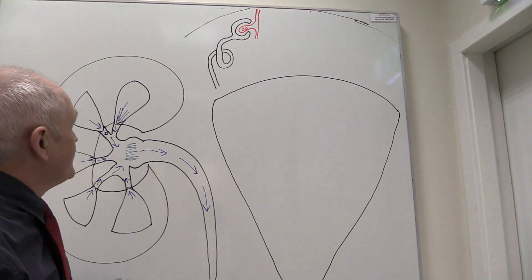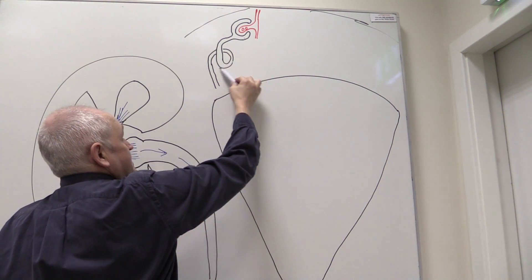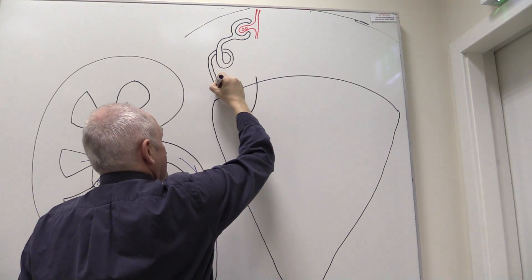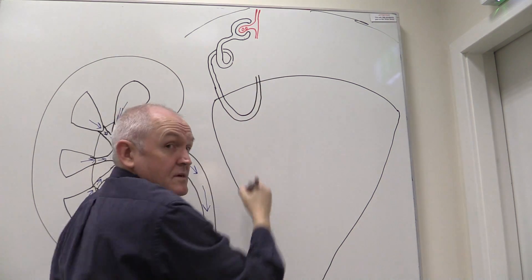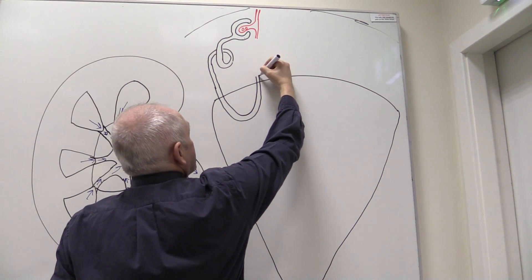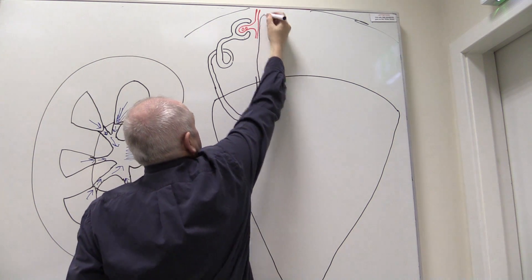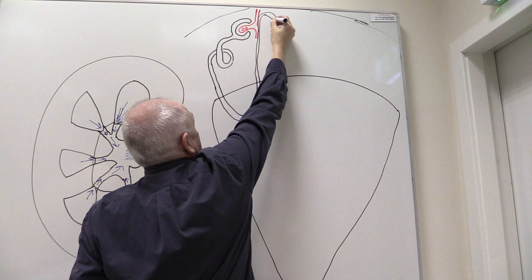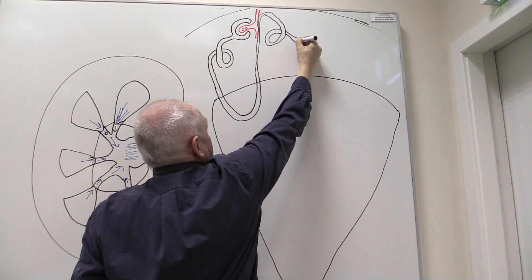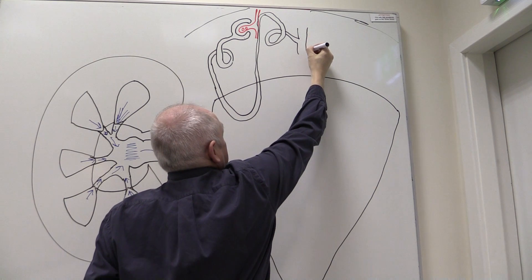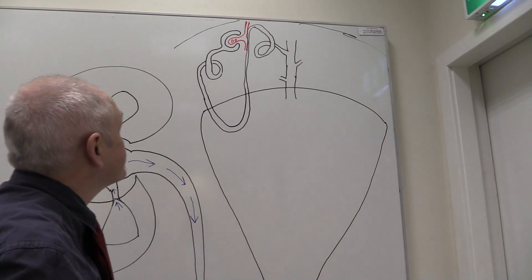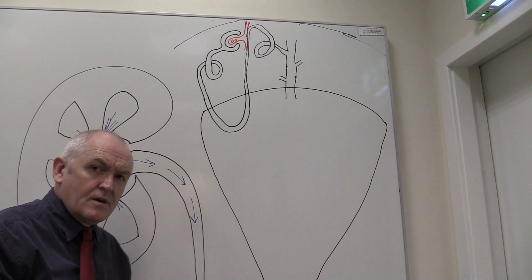In the case of this cortical nephron, after the first convoluted tubule there's going to be a loop. The loops are relatively small in cortical nephrons — about 80 to 85 percent of nephrons are these cortical type. The ascending loop of Henle then passes very close to the afferent arteriole. Then there's another convoluted tubule, and that drains into one of the collecting ducts, with many nephrons draining into a single collecting duct.